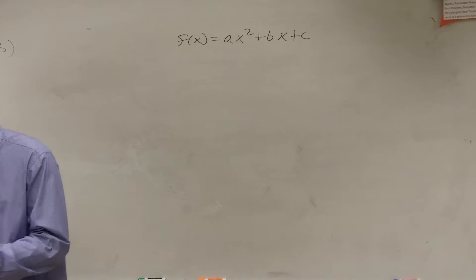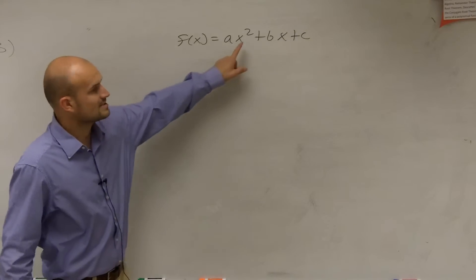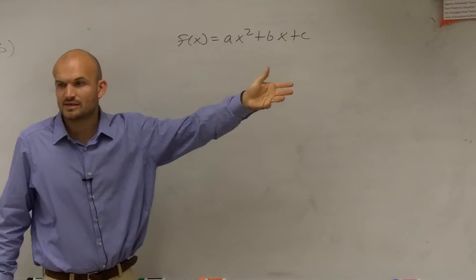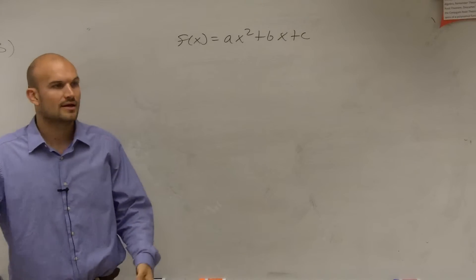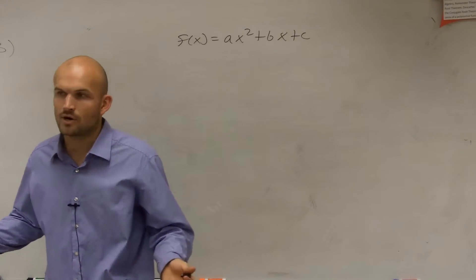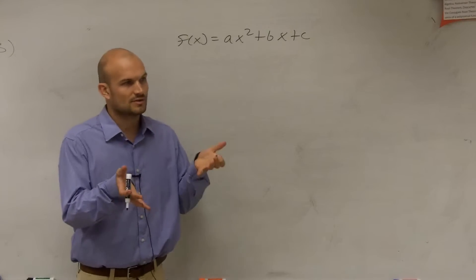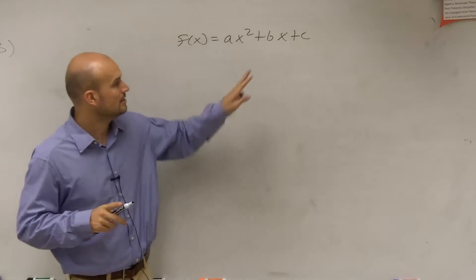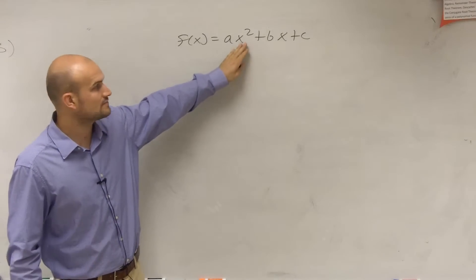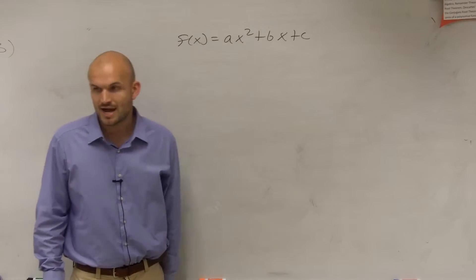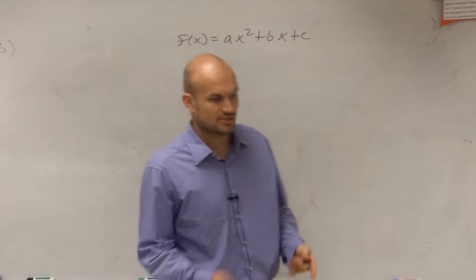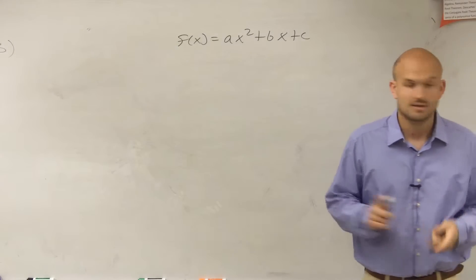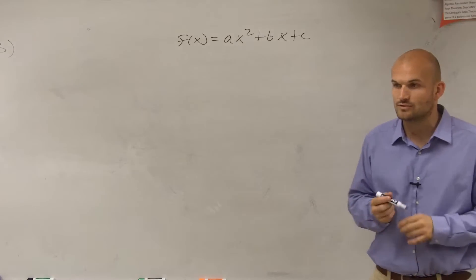The main important thing about quadratic functions was that we have our exponent of 2. We've talked previously about linear functions — like f(x) = x + 1 or 3x - 2. Those are linear, meaning you have a variable with an exponent of 1. When we have a variable with an exponent of 2, we have a quadratic. The important thing is that a, b, and c are real numbers, and a cannot equal 0.